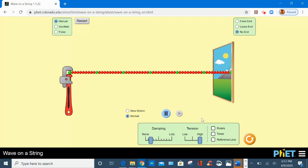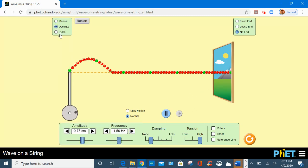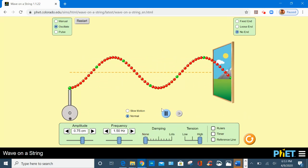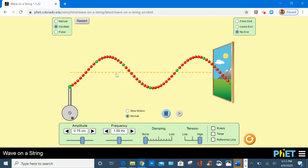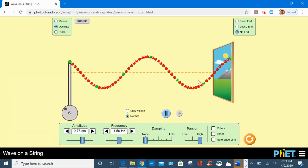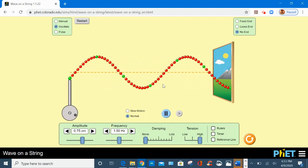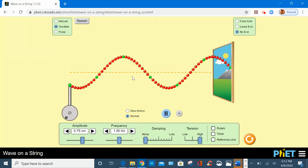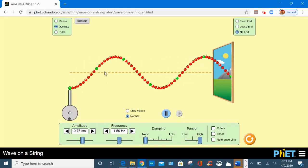To explain damping and tension, let's go back to the oscillate mode. Damping occurs when a wave loses its energy. So by losing its energy, its amplitude decreases because amplitude measures the energy of a wave. So this is the ideal situation where I have no damping, which means there is no friction, no resistance.